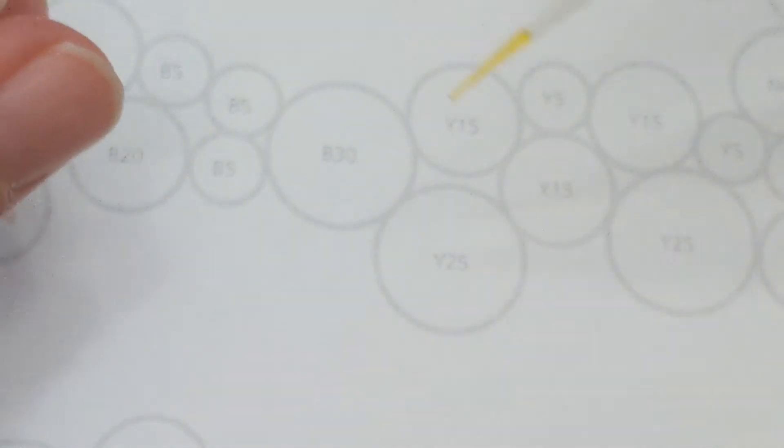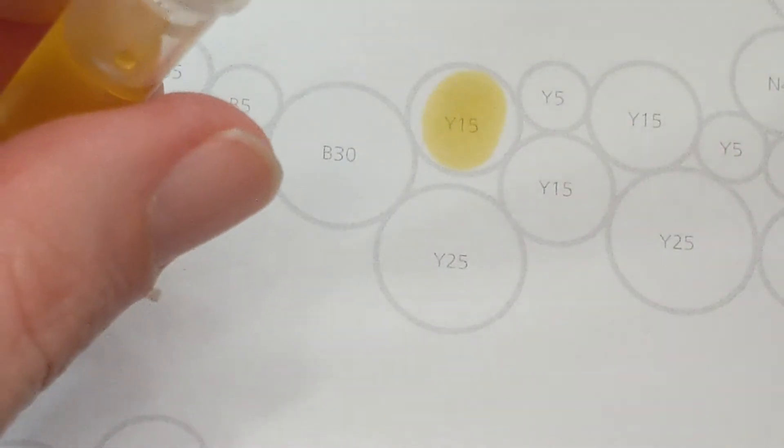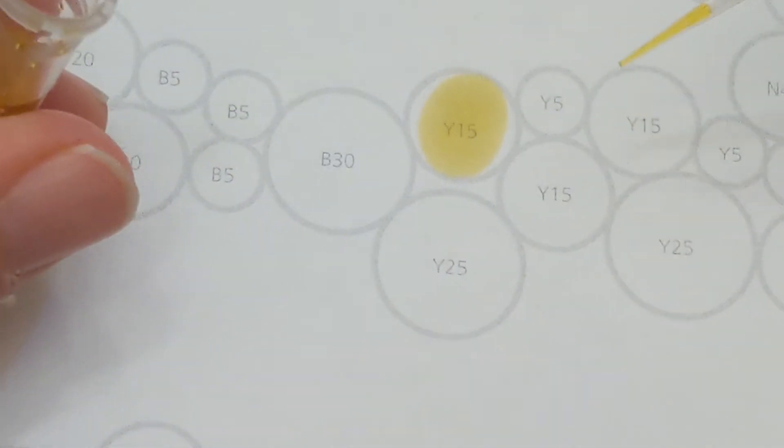And when you do it, pipette right into the center of the circle and go fairly slowly just so you don't make a mess. Make sure you push to the first stop to get your liquid and then to the second stop to expel all of your liquid. It might not fill that space exactly perfectly and that's okay. It should roughly fill it.